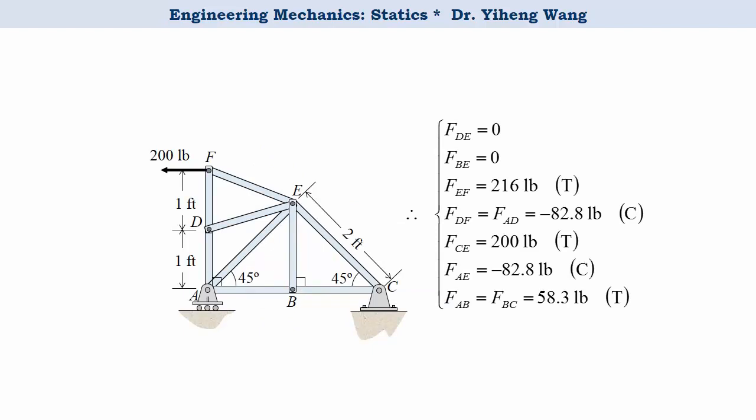And because member AB and member BC are collinear, again they have the same force. And now we have calculated the forces in all truss members and specified if they are in tension or compression as well. Hopefully from this example you have learned how to solve a simple truss structure by applying the method of joints.